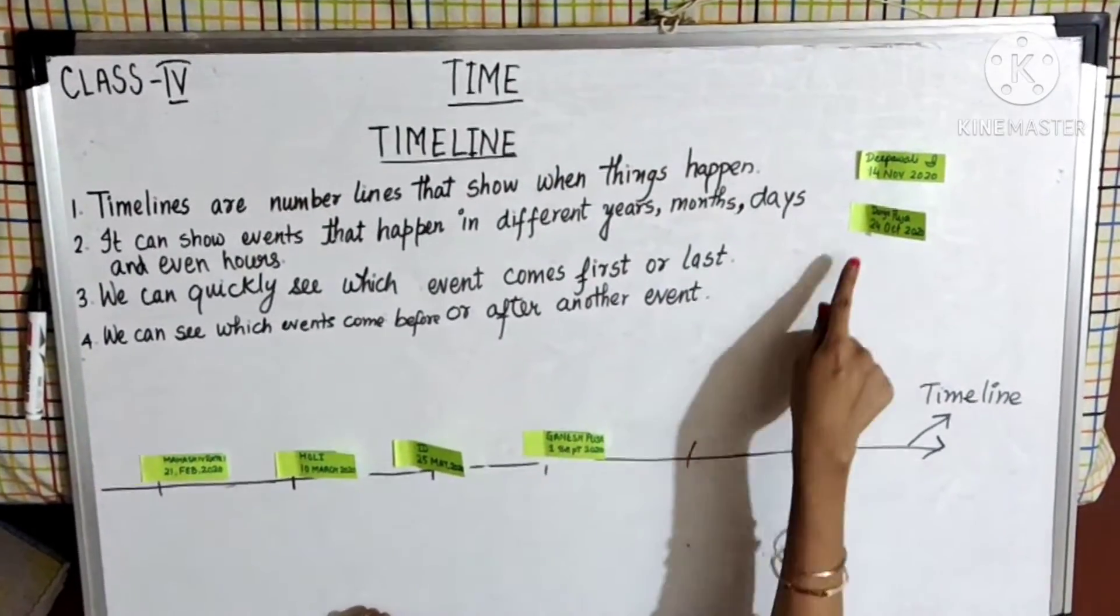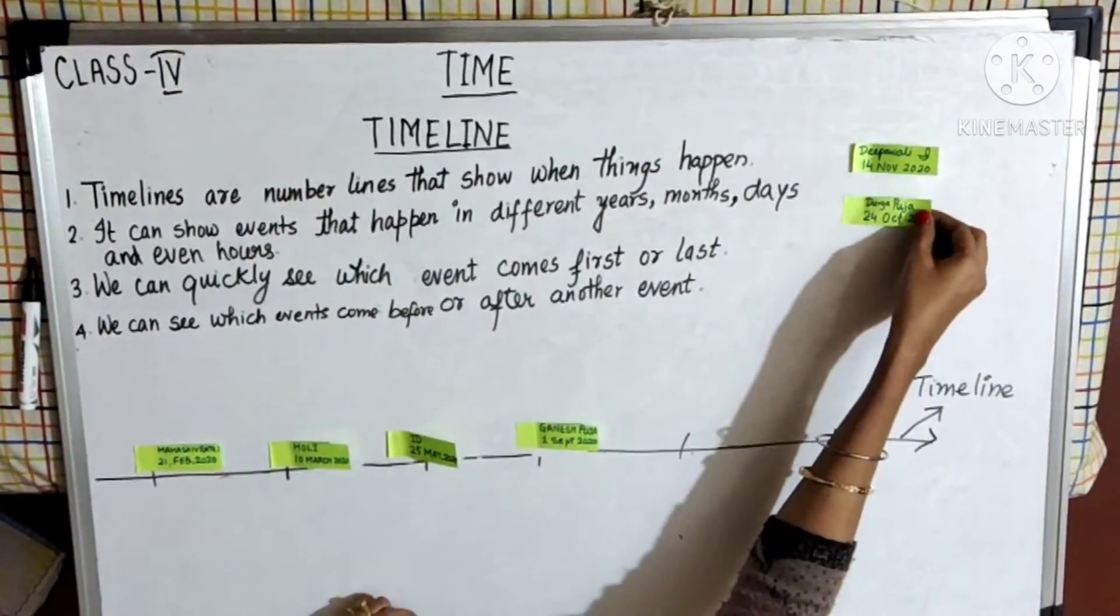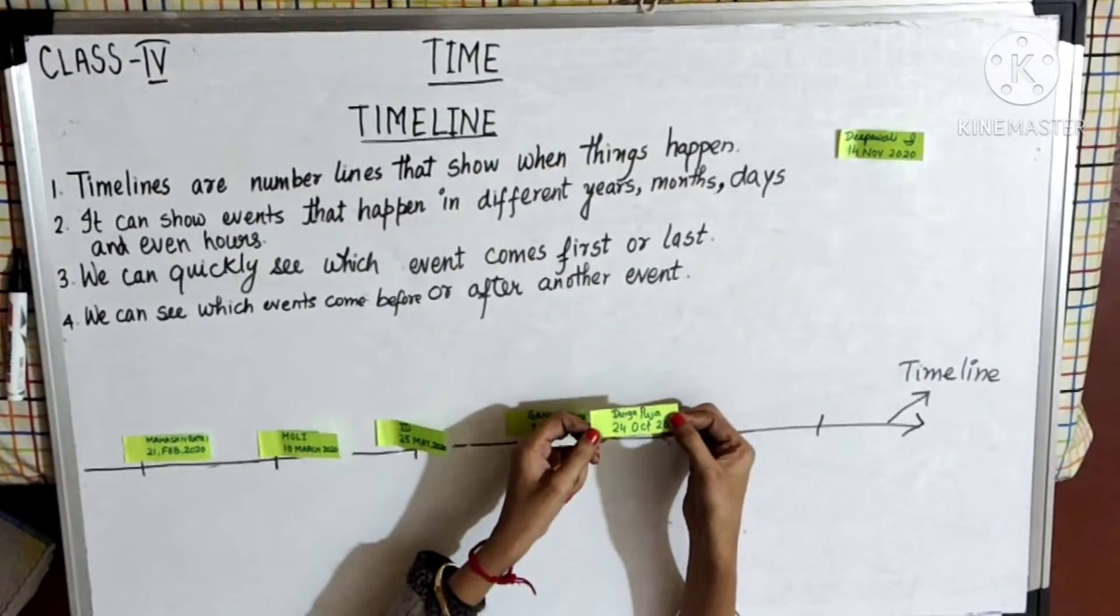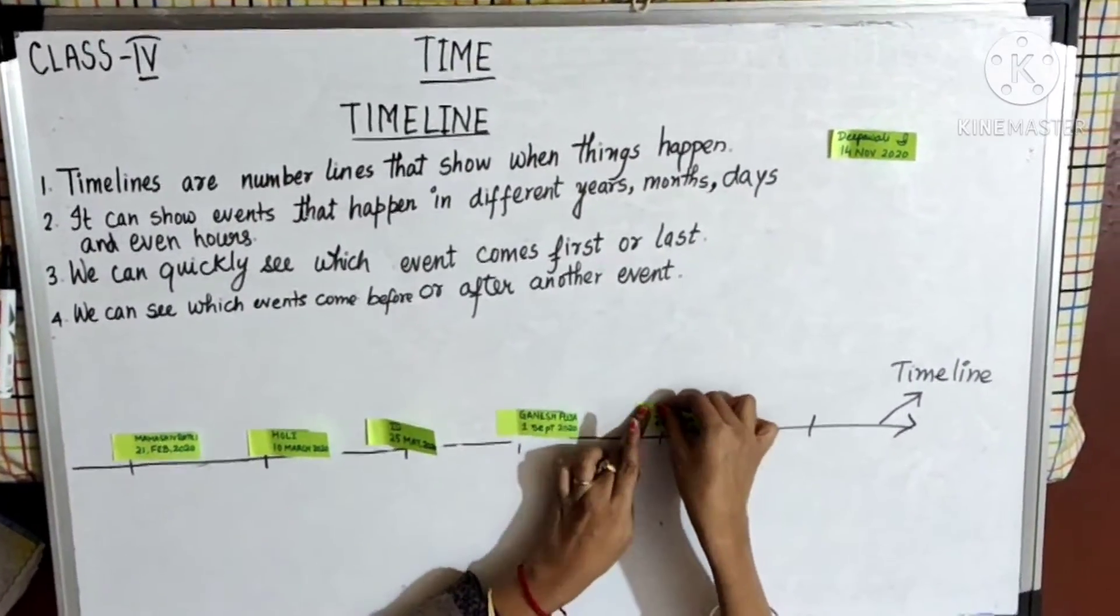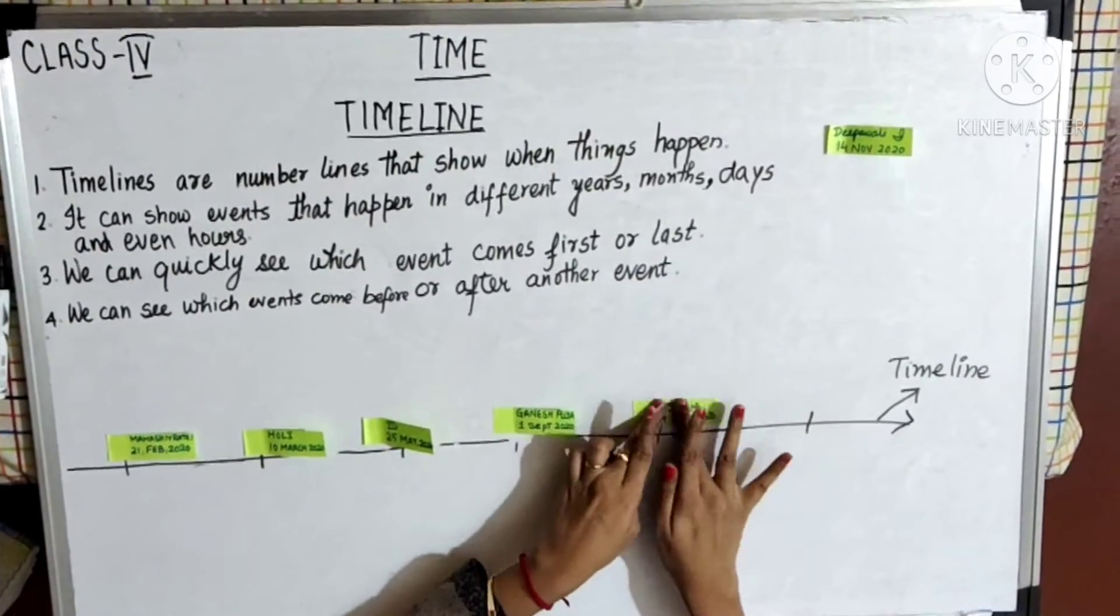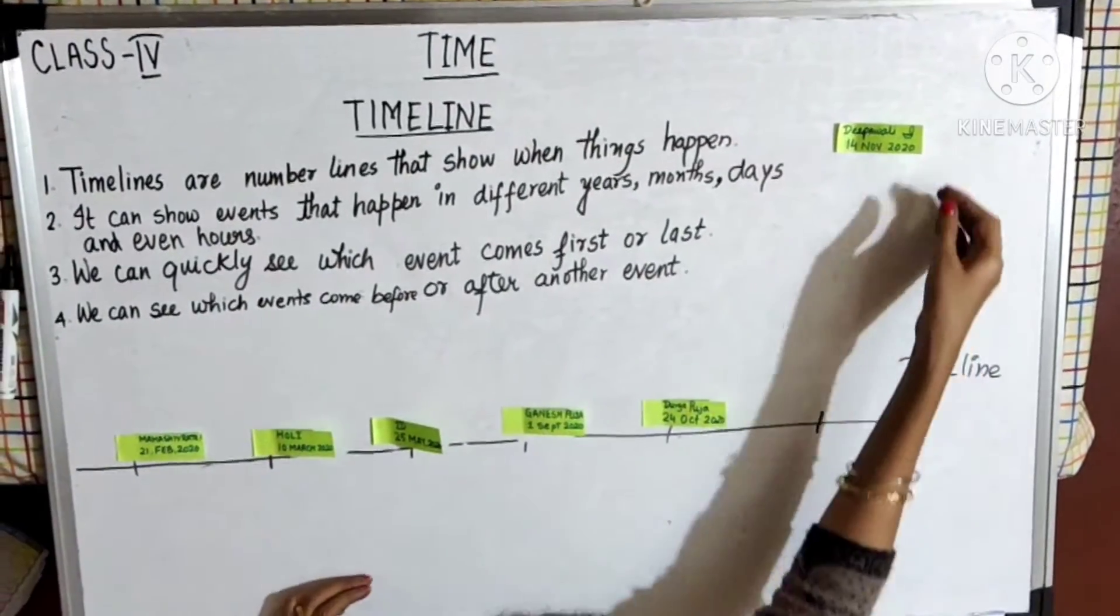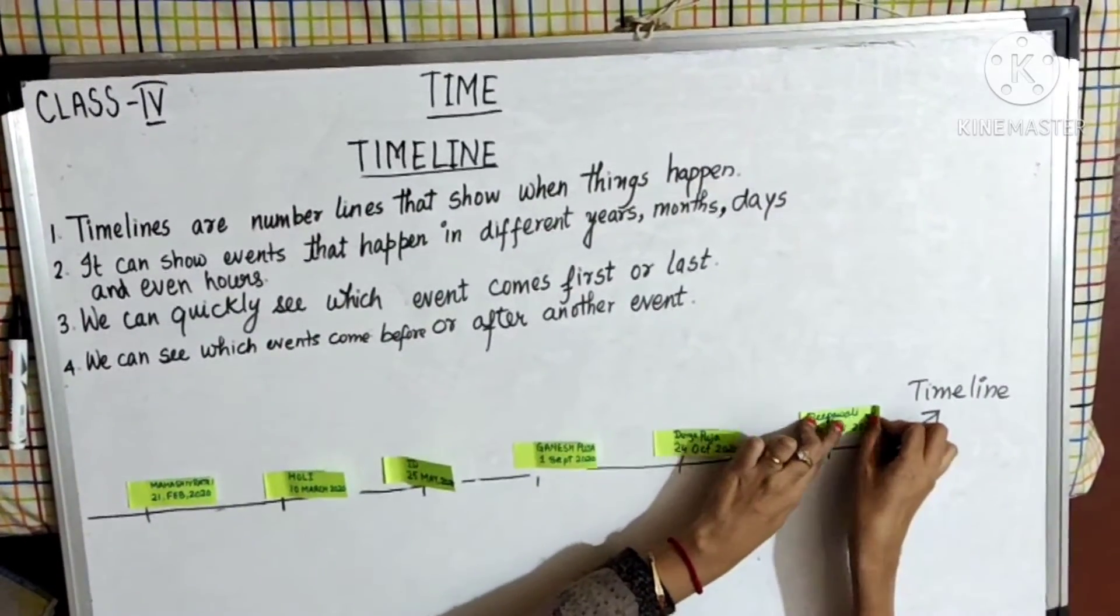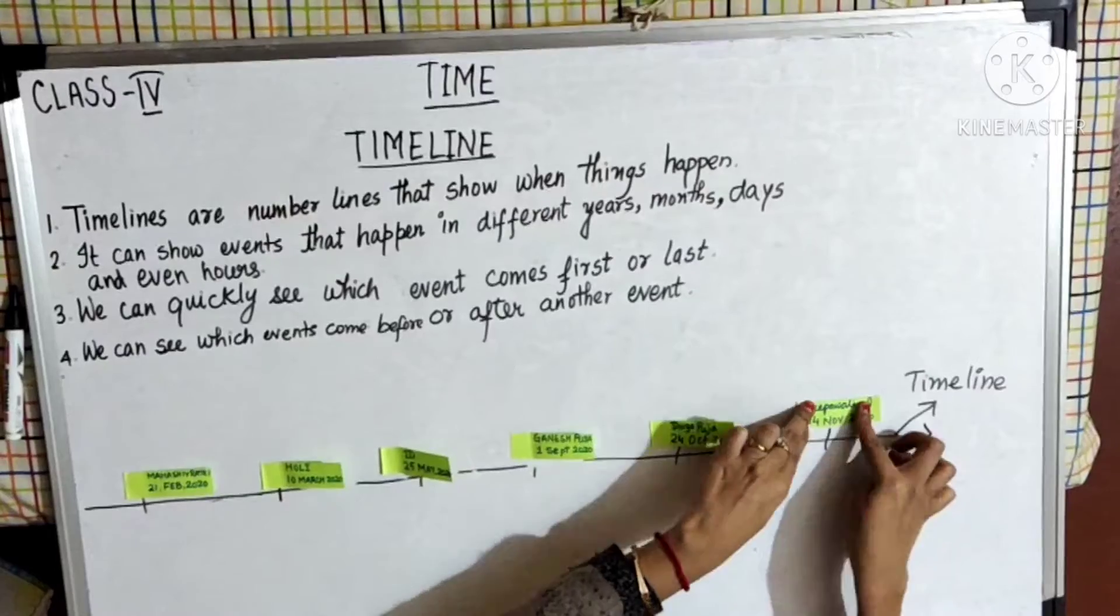After September, October is the next month, that is Durga Puja. Durga Puja was on 24th of October 2020. This is my second last event. The last one is Dipavali on 14th November 2020, the Festival of Lights.